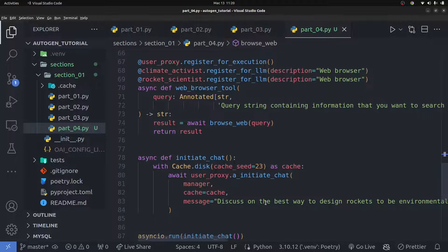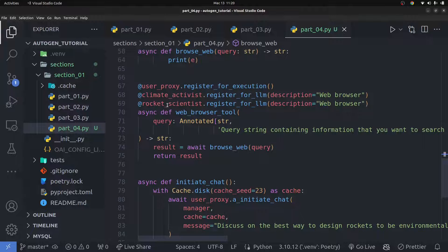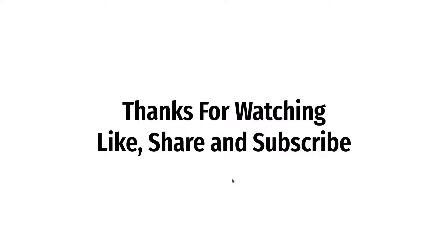That's all for this video — that's basically how to perform asynchronous function calling or asynchronous tool calling within a group chat. And this doesn't only work with group chat — it can also work with a single agent. You can create a single agent, register the tool for only that agent outside of a group chat, and everything should work fine.